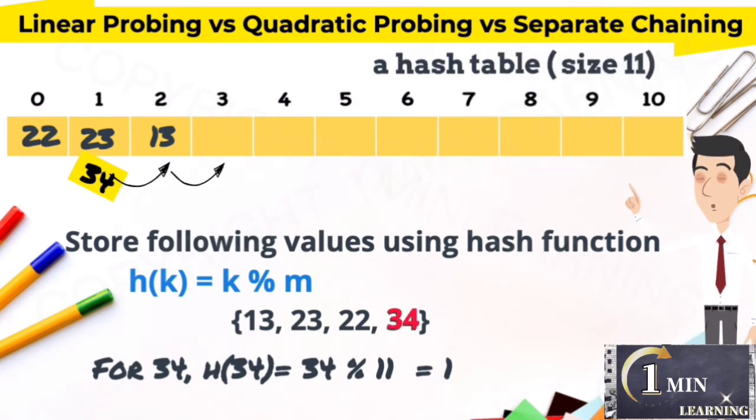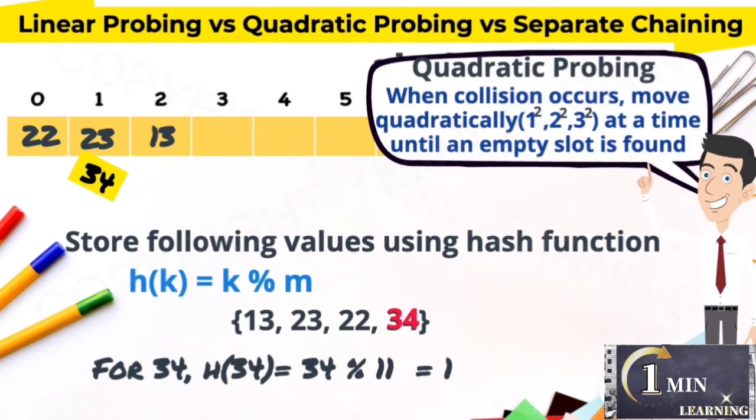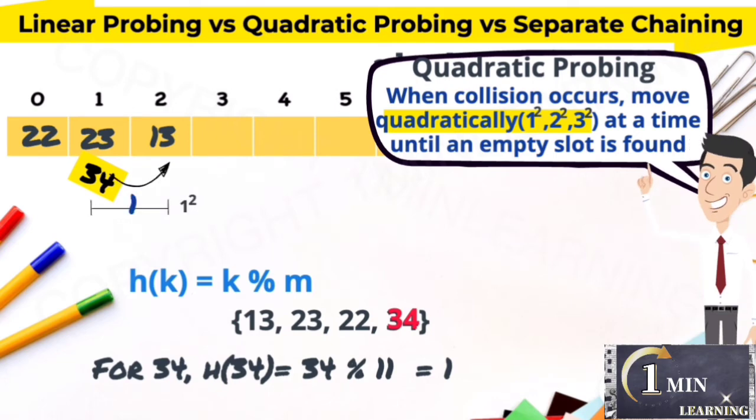34 is stored at index 3. In quadratic probing, when collision occurs, move quadratically at a time until an empty slot is found. 34 in index 5.